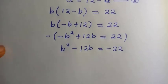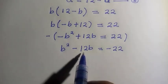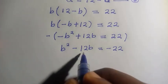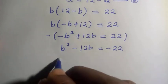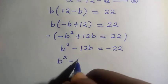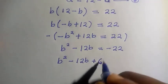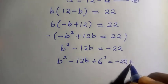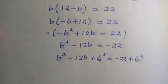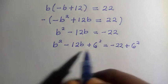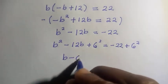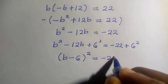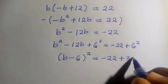Next we complete the square. We divide the coefficient of B by 2, which gives 6, then raise it to the power of 2 and add it to both sides. So we have B squared minus 12B plus 6 squared equals minus 22 plus 6 squared. We write the left side as B minus 6 all squared, and since 6 squared gives us 36, the right side becomes minus 22 plus 36.